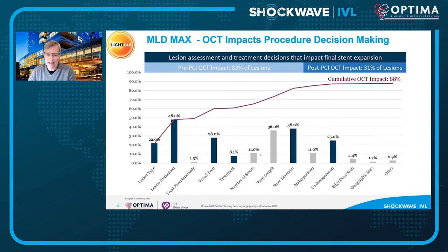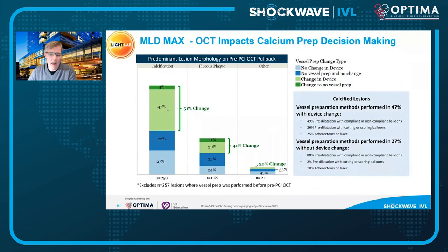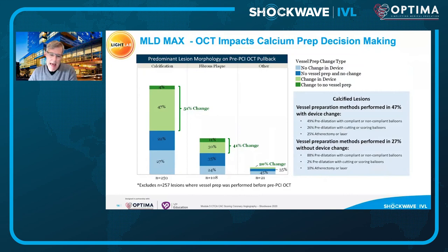On the back end, when you plan the case correctly up front, the post-PCI OCT impact was only 31% of lesions — you got it right up front. This is the difference between just checking at the back end versus doing a truly image-planned procedure. In cases where OCT detected calcium in the LIGHT Lab, physicians changed their vessel preparation strategy 47% of the time — to pre-dilation with compliant or non-compliant balloons, escalation to cutting or scoring balloons, or in 25% of cases escalation to atherectomy or laser. When calcium is detected by imaging it changes vessel preparation over half the time.